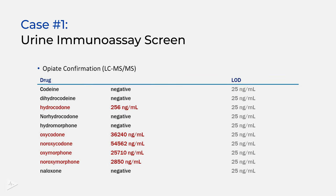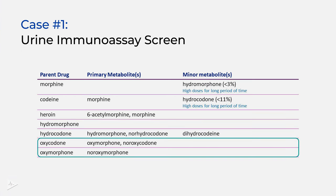If we go back to our result from our case, here are the confirmation results. You can see the list of results that were looked for, the concentration since this was a quantitative test, and the list of drugs detected. Now, most people get a little glazed over when we talk about drug metabolism — but it's very important. Many of the metabolites you see here are also prescription drugs. I'm going to focus on oxycodone since that's what we prescribed our patient. This slide contains the parent drug and its primary and minor metabolites — it's important to remember.